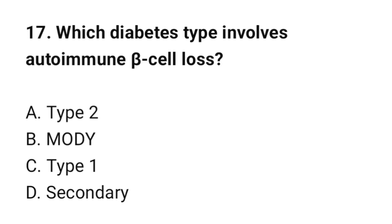Question number 17: Which diabetes type involves autoimmune beta-cell loss? The correct option is C: Type 1.